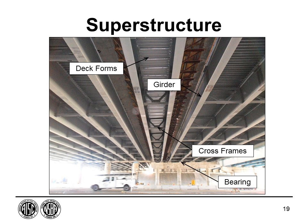Less familiar elements are found on the underside of bridges. Deck forms support the wet concrete of the deck until it is cured, functioning similarly to forms used in building construction. Girders are typically the main load-carrying members spanning from support to support. The girders sit on bearings, which accept the load and often accommodate movement from the girder and deck above. Cross frames provide lateral support to the girder members in their weak axis of bending.